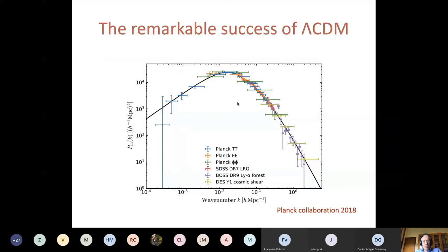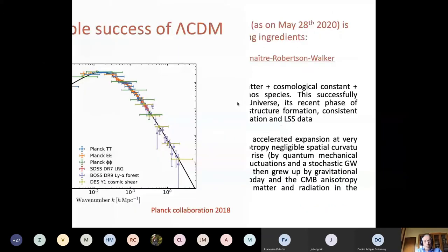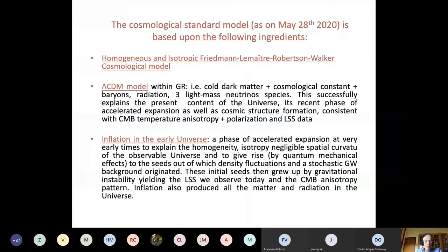What is behind this model? The first important assumption is homogeneous and isotropic Friedmann-Lemaître-Robertson-Walker cosmological model. The second assumption is Lambda cold dark matter. The third assumption is initial conditions provided by inflation. Why am I mentioning these obvious things? Because each of these three items would require discussion.